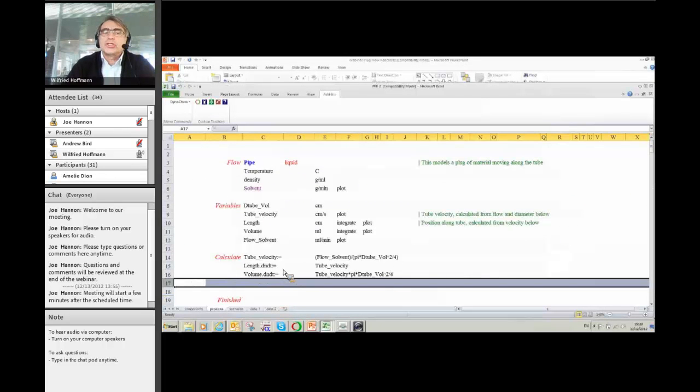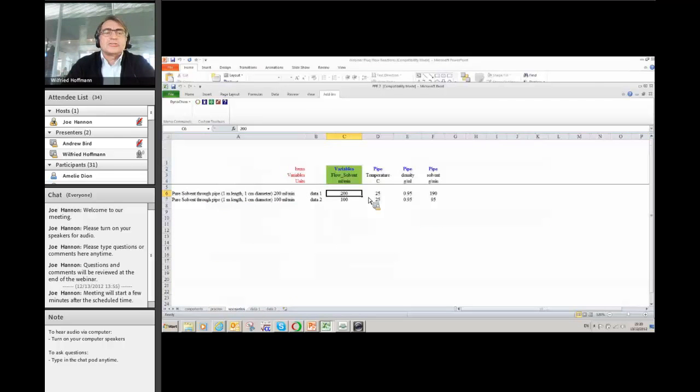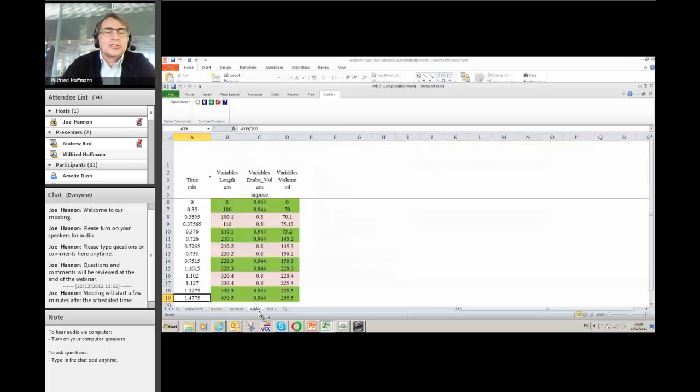So you see, there is no change actually in the process sheet, except I have removed the calculation of the Reynolds number because that's no longer required. We now assume that we get plug flow. So don't need to worry about the Reynolds number. The scenario sheet is not changed. So we have here two different flow rates,